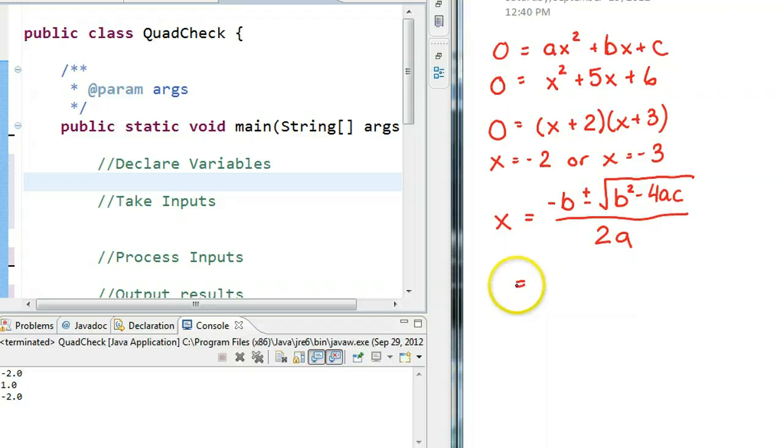And so, what we can do is, if we know the values a, b, and c, so if we come up here, in this case, a is equal to 1, b is equal to 5, and c is equal to 6, we can sub these directly in.